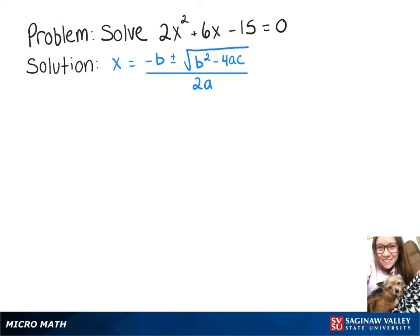In this video we're going to solve 2x squared plus 6x minus 15 equals zero using the quadratic formula. So 2 will be a, 6 will be b, and negative 15 will be c.